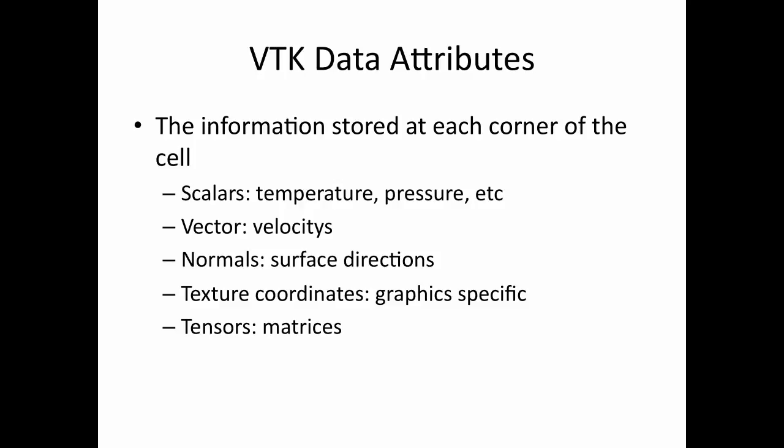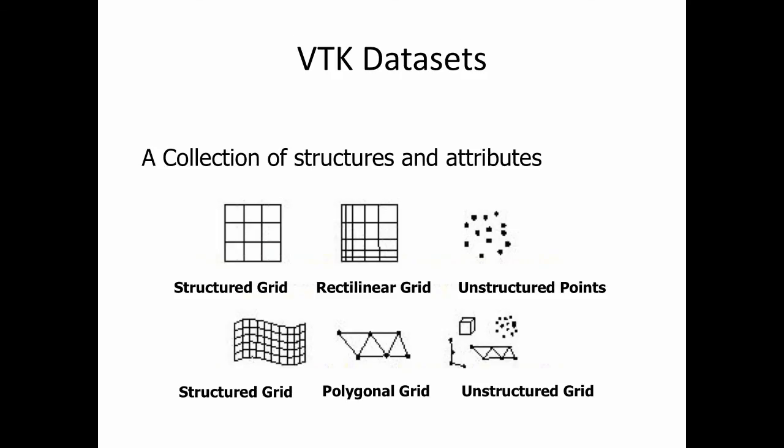About the attributes: they are the information stored at each vertex point, or at the corners of the cells. The attributes can be scalars, which is a single value used to represent, for example, temperature or pressure. The attributes can be velocity, which is a vector. They can be surface orientation called normal, which is also a vector. They can be tensors, which are matrices. A VTK dataset is a collection of structures and attributes, and datasets can have different types of mesh — for example, structured grid, rectilinear grid, and so on.